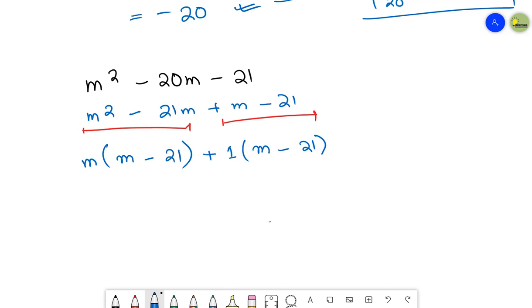Now look at this: here these two brackets have become exactly the same: m - 21 and m - 21. So I can take both common and write them once: m - 21. Besides this, the values that are outside, combine both and write in a separate bracket, which will multiply with this. So these are the two factors of your given expression.